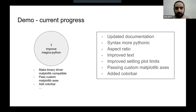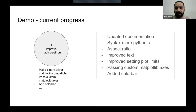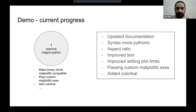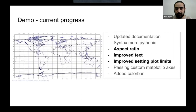For current progress: the first half focused on improving Magics Python, and the second half will focus more on MagPy and creating tutorials. Updates so far include updating the documentation, making the syntax more Pythonic for Magics Python, taking care of the aspect ratio, improving the text, improving setting the plot limits, adding support for passing custom Matplotlib axes so you can plot the Magics plot on a user-defined axis, and adding a color bar for better visualization.